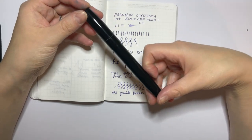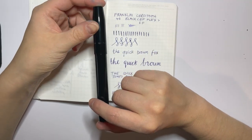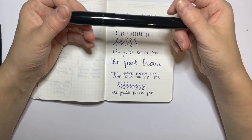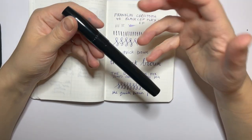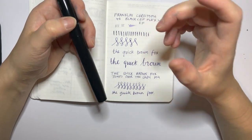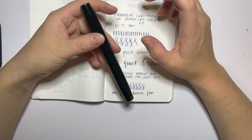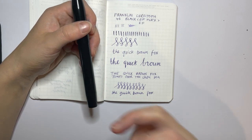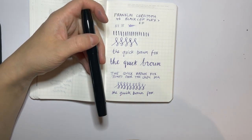So that, guys, is the Franklin-Christoph Model 46 with an extra fine flex nib. I think for me, love this pen, works really well. I think it's a particular type of flex which suits my writing style because it makes it into like a wetter extra fine.